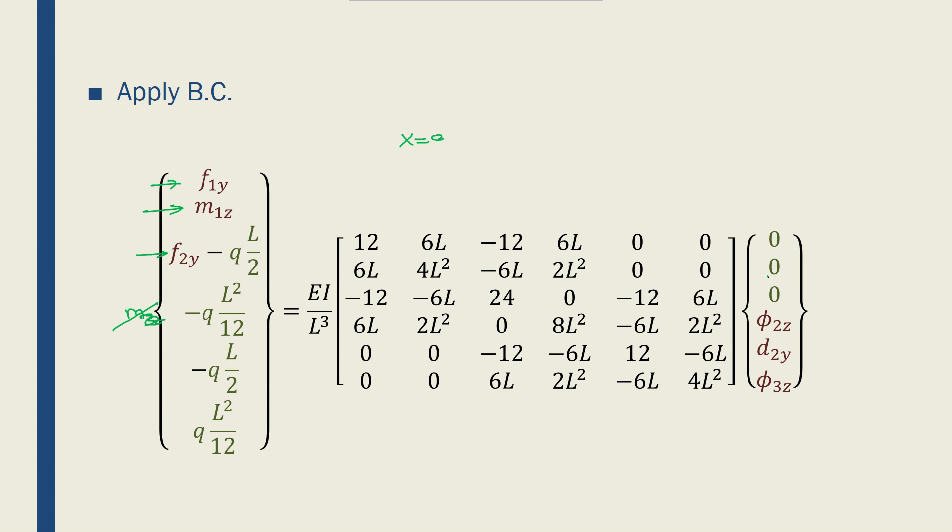The boundary conditions determine the displacement vectors. The beam at its fixed end doesn't move in y direction and doesn't have any rotation. At the middle it doesn't have displacement in the y direction, but it can rotate. So I have six unknowns and six equations, a system of equations that I can solve. This is the global stiffness matrix.